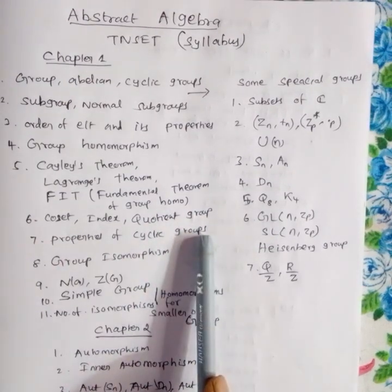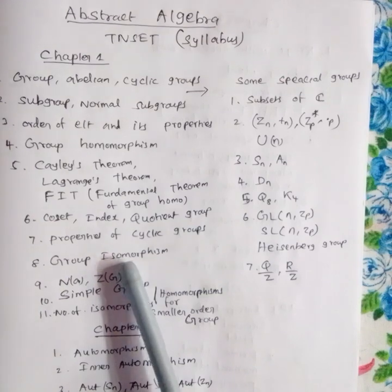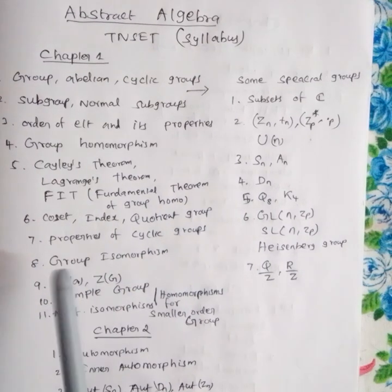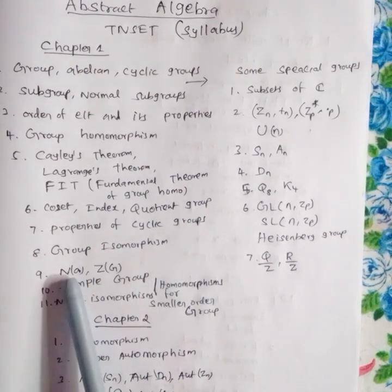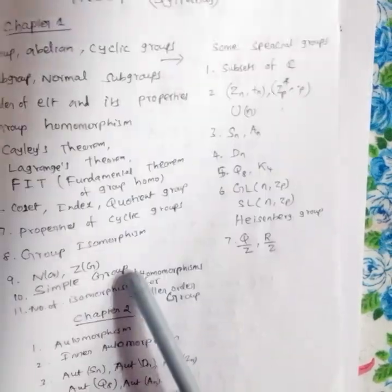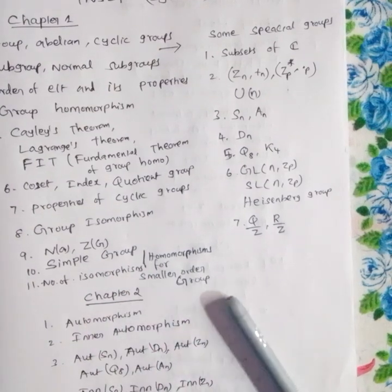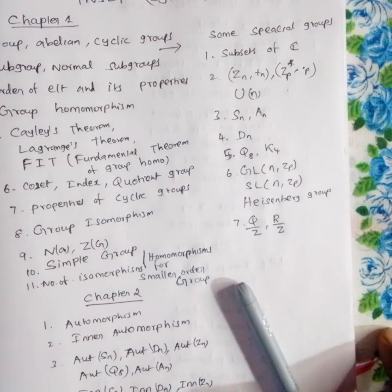The properties of cyclic groups and the quotient group are included. Isomorphism is defined along with its properties. We will classify isomorphism for smaller order groups — orders 2, 3, 4, 5, 6. For order 6, one group is S3 and another is Z6.